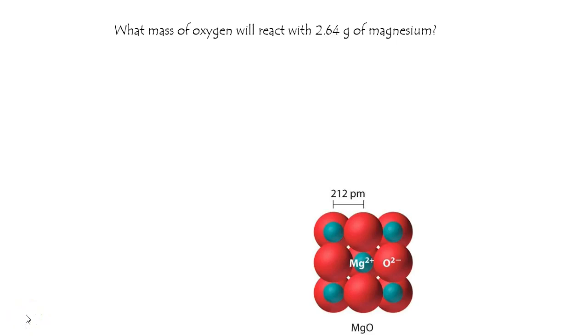What mass of oxygen will react with 2.64 grams of magnesium? We start by writing a balanced chemical equation. Magnesium, we will simply write Mg. It is not diatomic, but oxygen is.